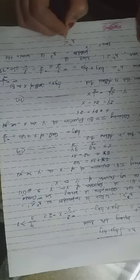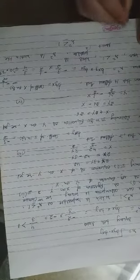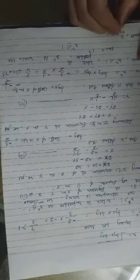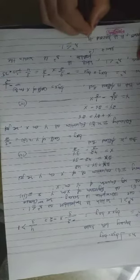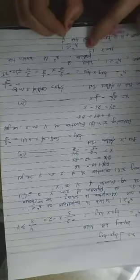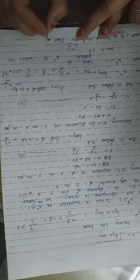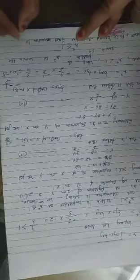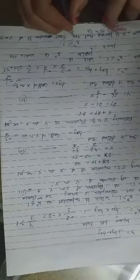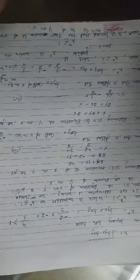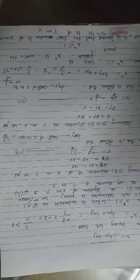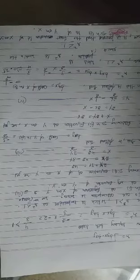Here r² = 0.75, which is less than 1, and this is possible since r² is always less than or equal to 1. Hence our assumption is correct: the first equation is the regression equation of x on y, and the second equation is the regression equation of y on x.